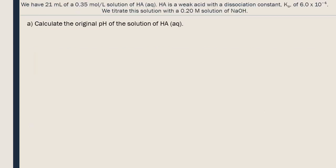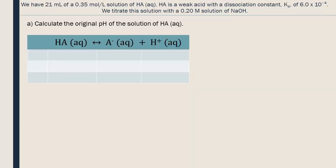Part A. This acid will dissociate a little bit into its conjugate base. Let's write the equation for this dissociation. We will use an ICE table for each of the three parts of this question. This table presents the initial concentration of each reactant and product, their changes, and their concentrations at equilibrium. By completing an ICE table, we can determine the concentration of the H plus ions and then, afterwards, the pH.